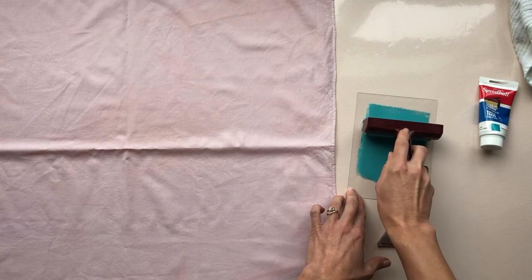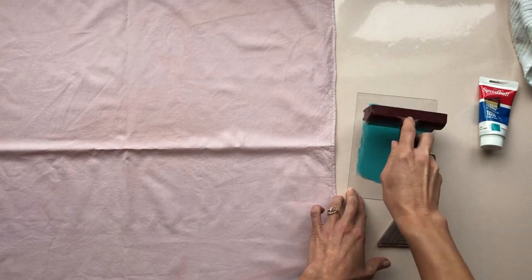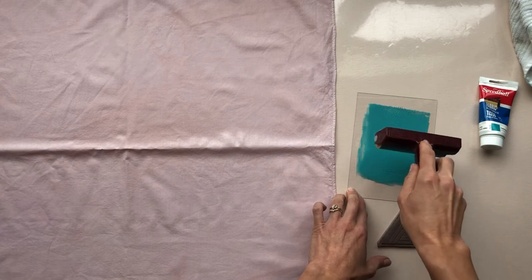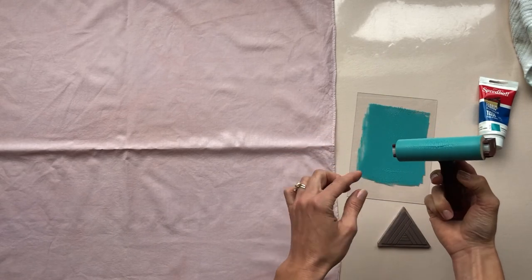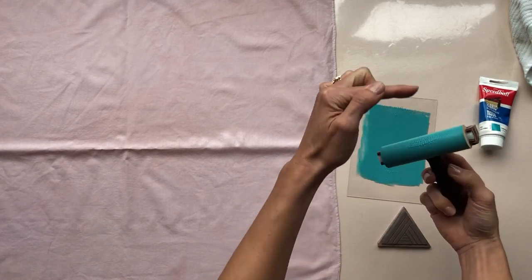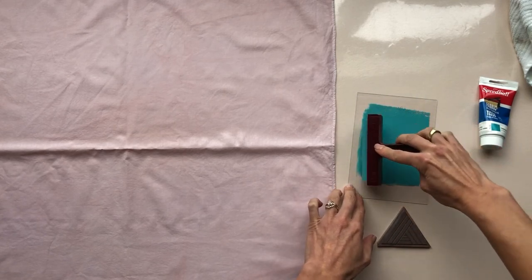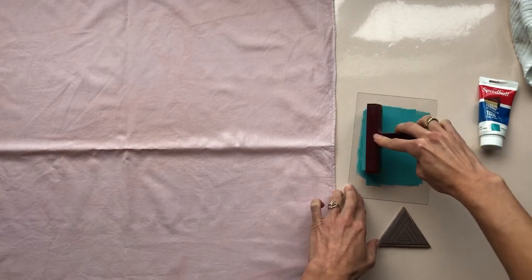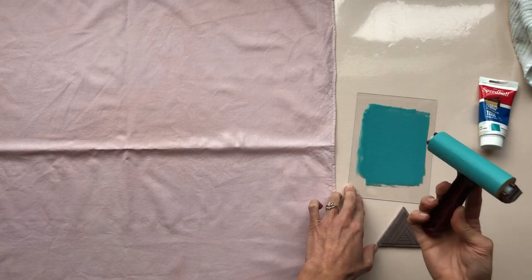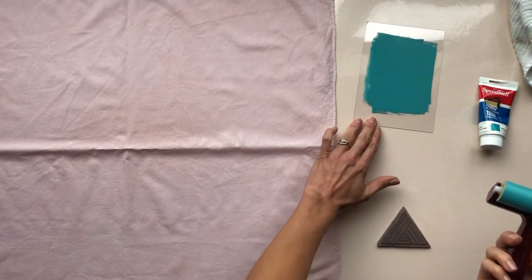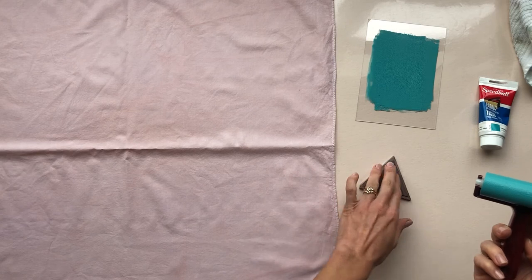And you notice I'm kind of dropping the brayer down, rolling and picking up again, so that I don't just get stuck on the same spot on the brayer. You want the ink to be going all the way around. So I get a good even coating there. And then I'm going to roll it on my stamp.